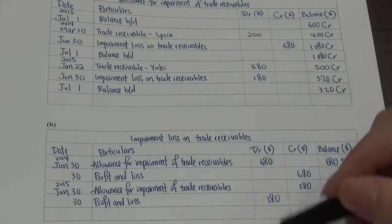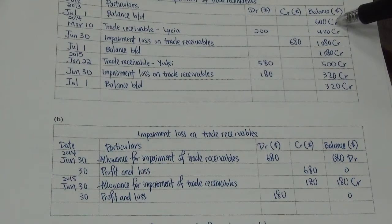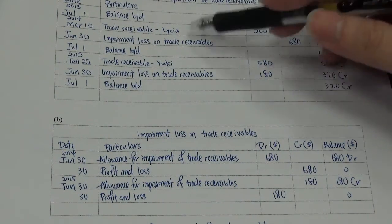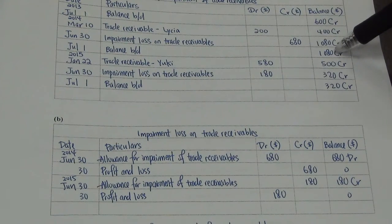So 7 lines. Each of the numbers in a new line. Okay, so 600 is your balance brought down. 200 trade receivables. Must write the name. 680 impairment loss. 1080 balance brought down.